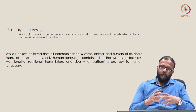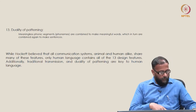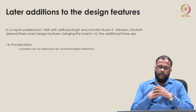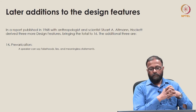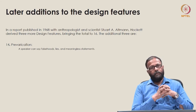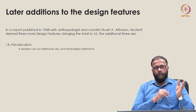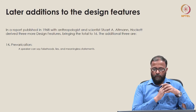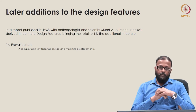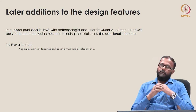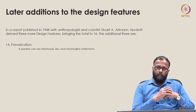In a report published in 1968 with anthropologist Stuart A. Altman, Hockett derived three more design features and added them to the original thirteen, bringing the total to sixteen. These three additional features are prevarication, reflexivity, and learnability.